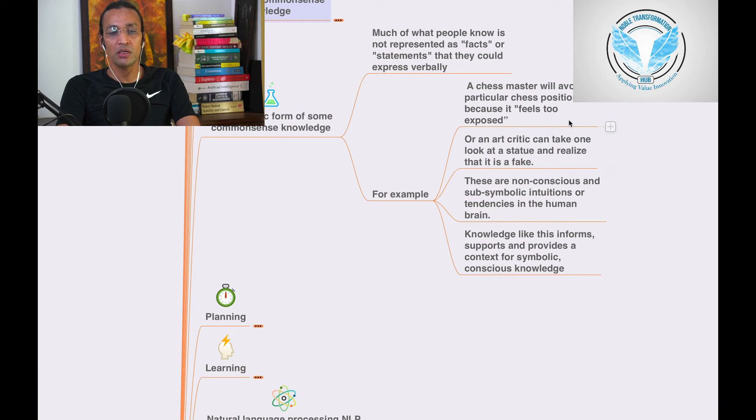For example, a chess master will avoid a particular chess positioning. When we are playing chess, and in AI, chess is the basis. It was basically Alan Turing who created that game. You know, chess, when we play chess, they are giving an example.